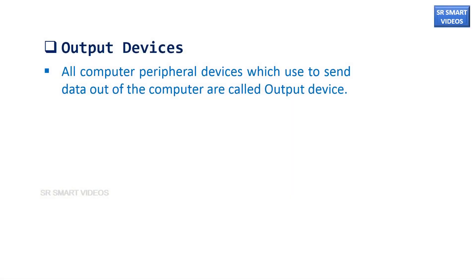All computer peripheral devices which are used to send data out of the computer are called output devices. Let us discuss the most common output devices of a computer system in detail.